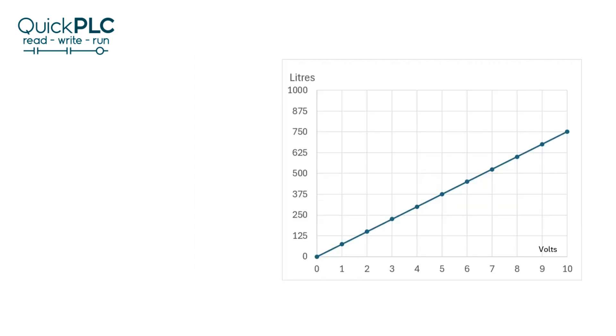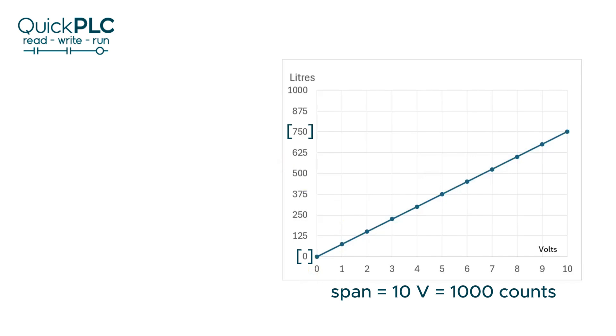Here we draw our transfer function and we can see it's a straight line. At zero volts we have zero liters and at 10 volts we have 750 liters.